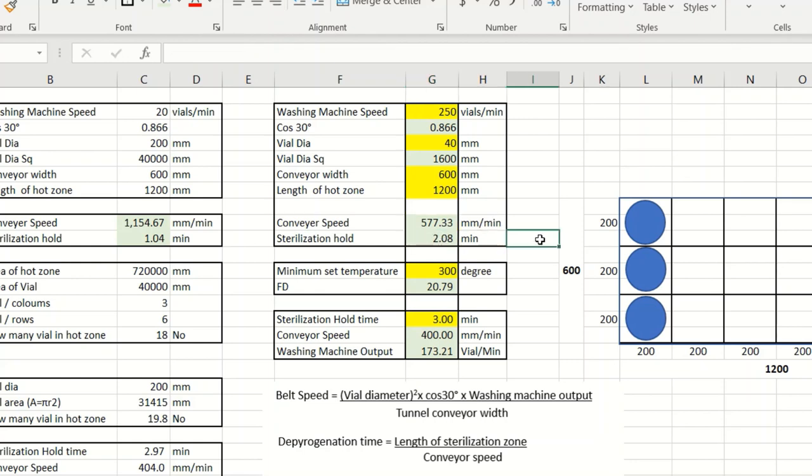Now you will be confused. Sometimes people use 300 degrees for 3 minutes. Although I never support that fundamental because guidance is talking about 3 endotoxin reduction and choice of temperature and time in your tunnel based on your qualifications.